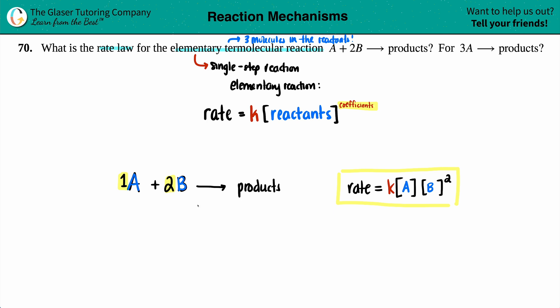Now, we just have to do the second one. 3A yields products. I'm assuming that this is also going to be a termolecular elementary step. And, for this one, you only got one reactant and it's raised to the third, right? You got three of them. So, rate equals K times, you only got one reactant, which is the A value. And now, only if it's elementary steps, can we raise it to the coefficient. So, this would be raised to the third. And that is the answer here.